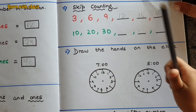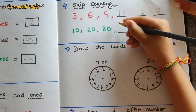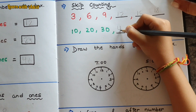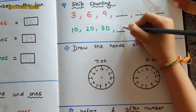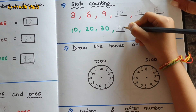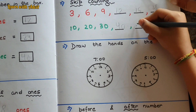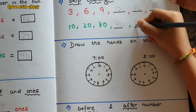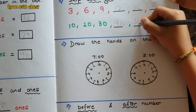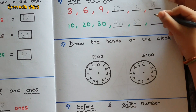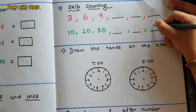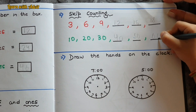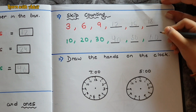Thirty, forty, fifty, sixty — skip counting by ten.